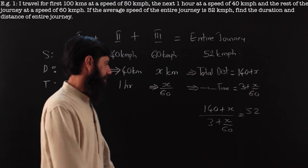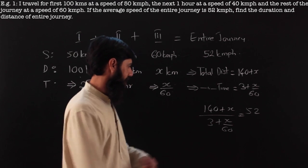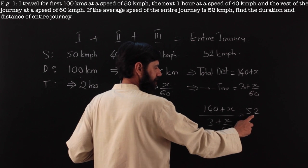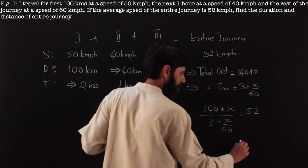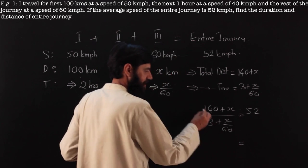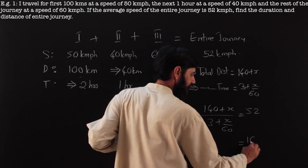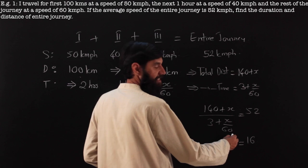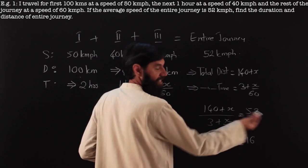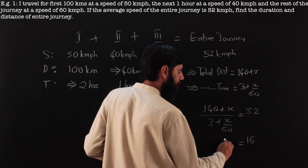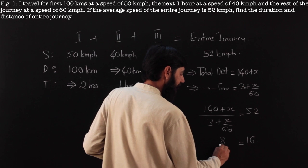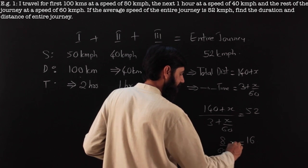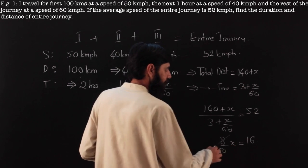It is just a matter of algebra. Total distance over total time is equal to 52 kilometers per hour. We have to do some cross multiplication and solve it. 3 into this is 156, there is a 40 here. I will be left with a 60. 52 by 60, there is an x, 1 minus 52 by 60 is going to be 8 by 60 x.